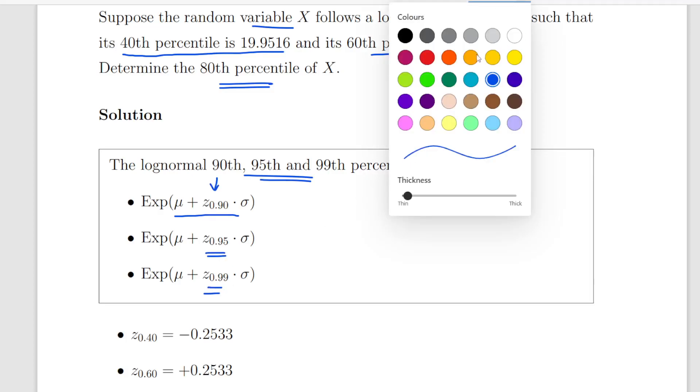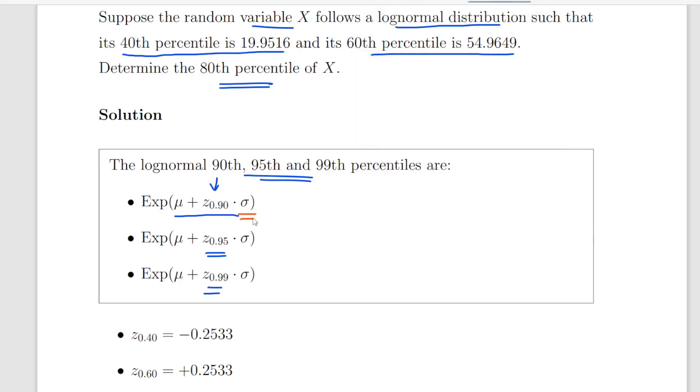Beyond that what we have is the mean and the standard deviation of the lognormal distribution. So essentially it's just getting the exponential of the mu plus the Z score times sigma. That's how we get the lognormal quantiles.